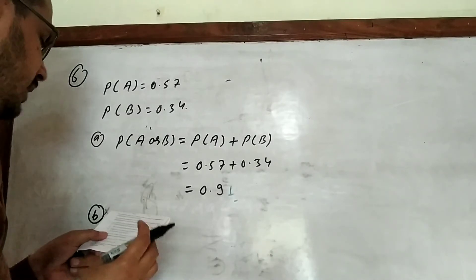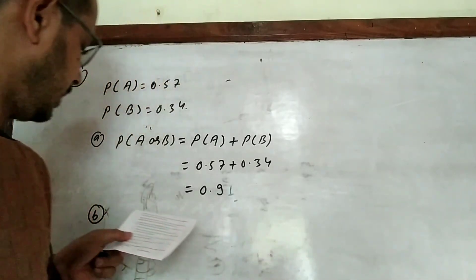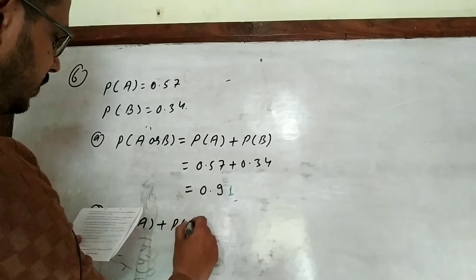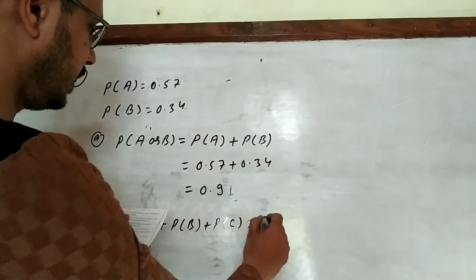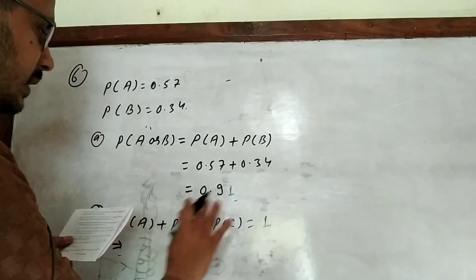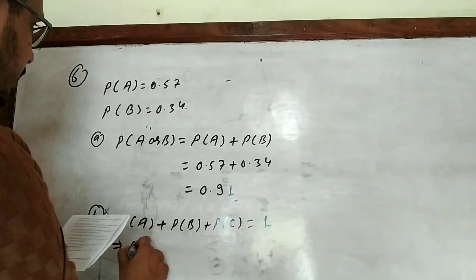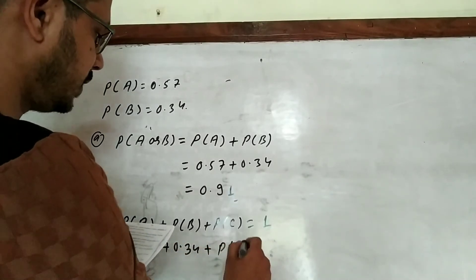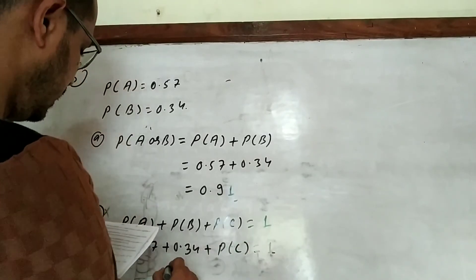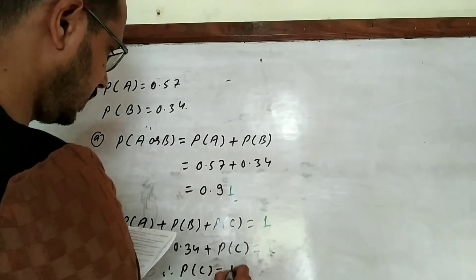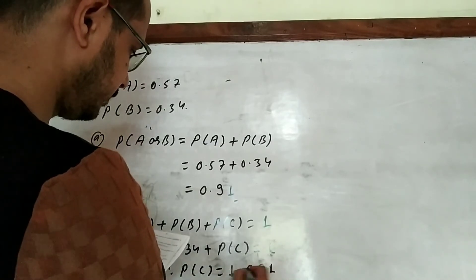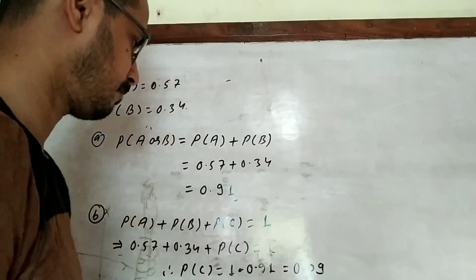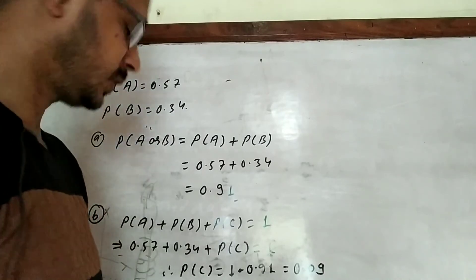Part (b): if there are only three grades A, B, and C, what is the probability that the student will get grade C? Since P(A) + P(B) + P(C) = 1, we have P(C) = 1 − 0.91 = 0.09. That's the answer for question number six.